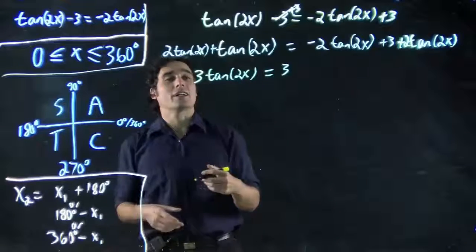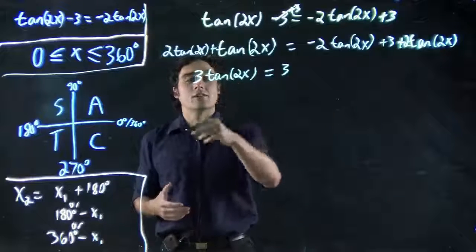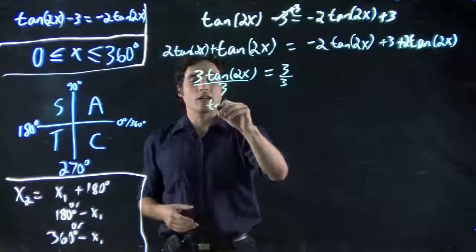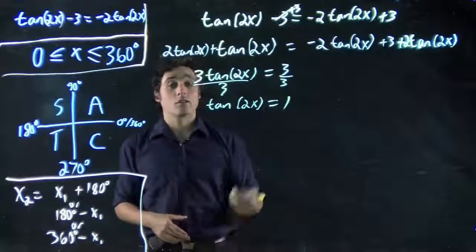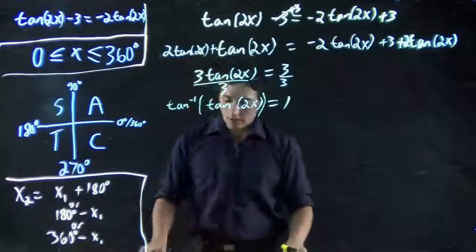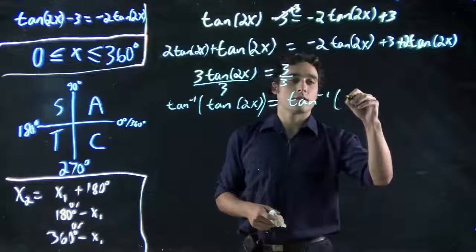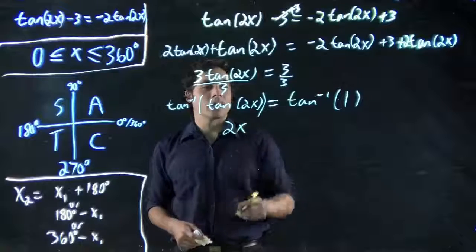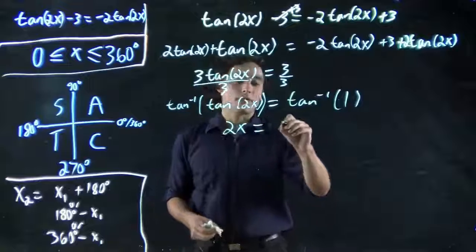We still have to get tan(2x) or x ultimately on its own. That's our big goal. Remember, we want to solve for x, get 2x or x on its own, divide both sides by 3. And now we have tan(2x) is equal to 1. Or we take the tan to the minus 1 of both sides. What we're going to get, these two cancel, so we're left with 2x, and tan⁻¹(1), we punch it into our calculator, we should get 45 degrees.